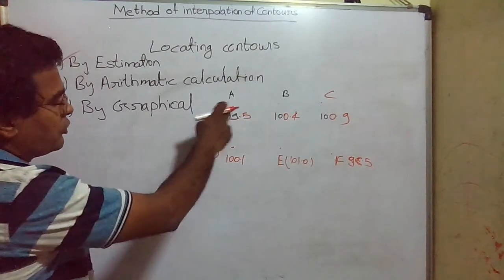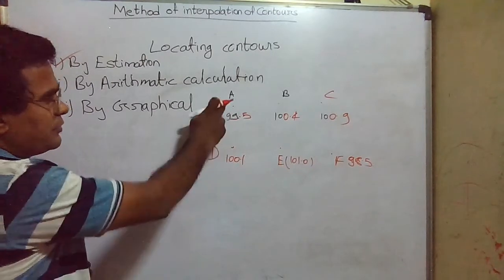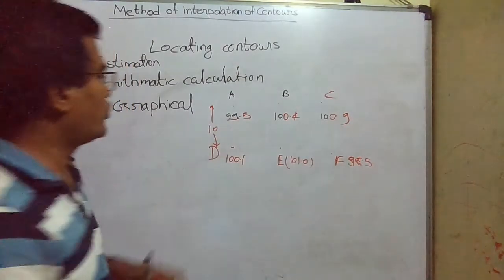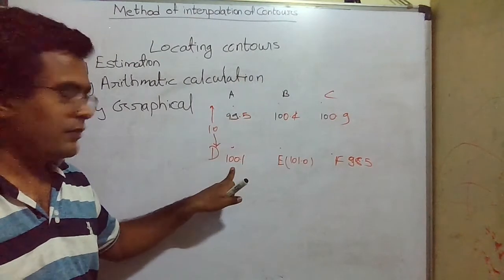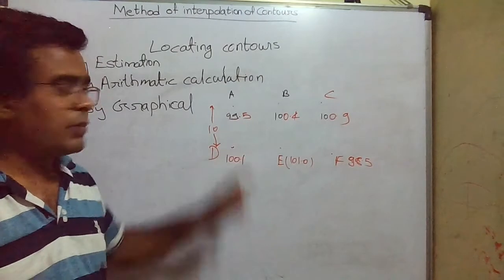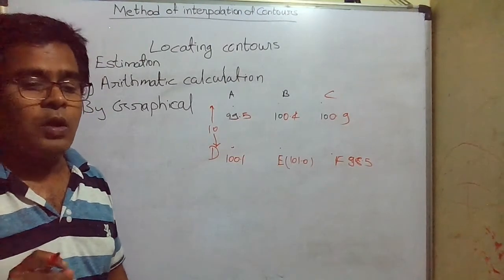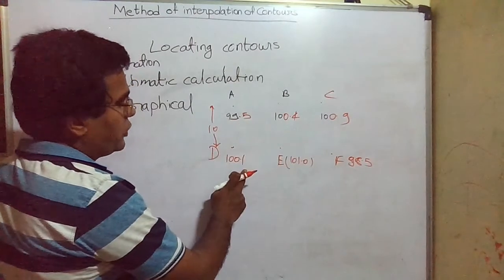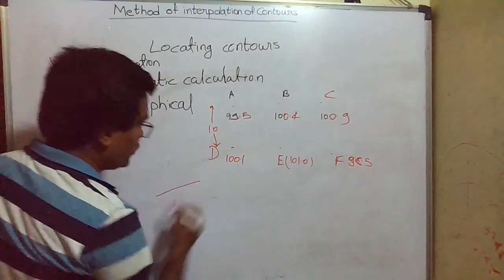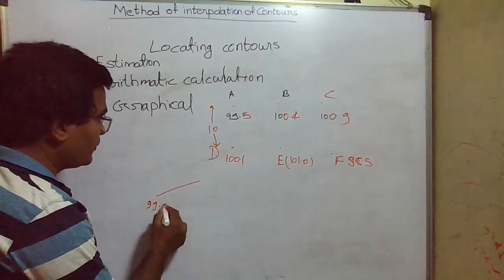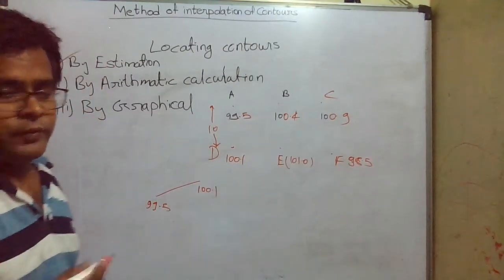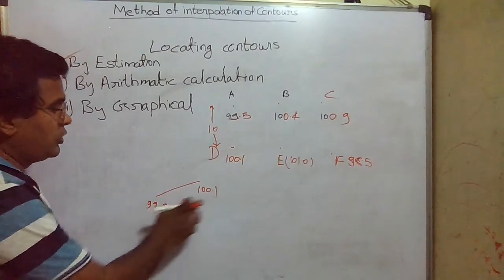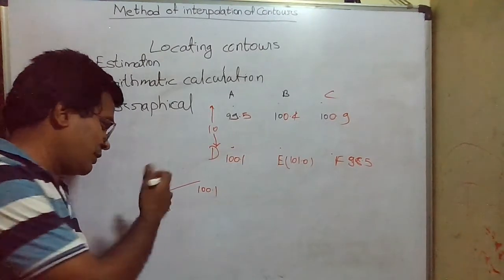By estimation: this point is 99.5 and this is 100.1. Let the distance between them be 10 meters. The RL difference is 0.6 meter. Now suppose I want to locate the point of RL 100 in between. Since 99.5 and 100.1 have a difference of 0.6, the RL 100 will not be near 99.5 — it will lie somewhere in between. By estimation, in between these two points there will be some RL of 99.8 midway, so RL 100 will be near the 100.1 side.